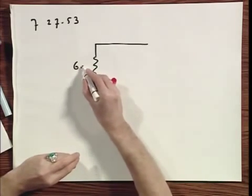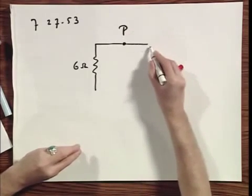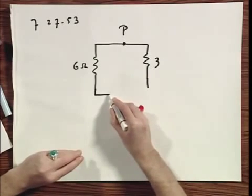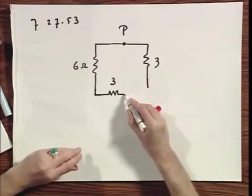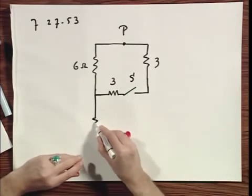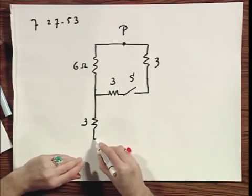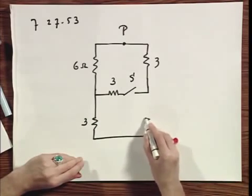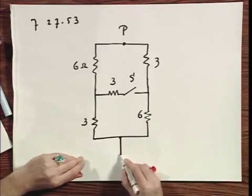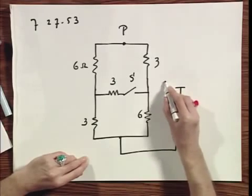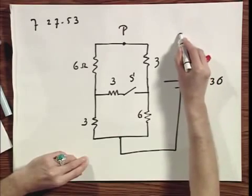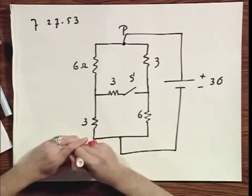Here is six ohm. I call this point P. Here is three ohm. I will delete the word ohm, the symbol ohm. This is three ohm. Switch S continues here. Three ohm. Six ohm. This point connected to a battery. Plus minus 36 volts all the way back to point P. And that's the circuit.